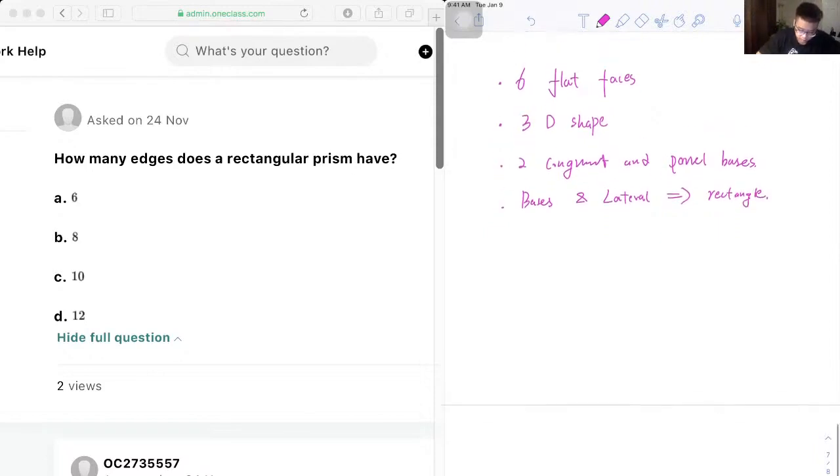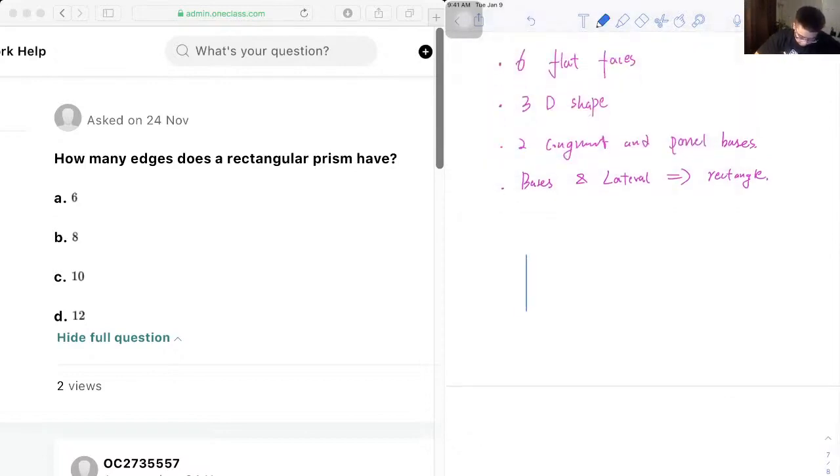So let me just draw a diagram for you. It should be something that looks like this. So it has six flat faces and it's a 3D shape. It has two congruent and parallel bases.